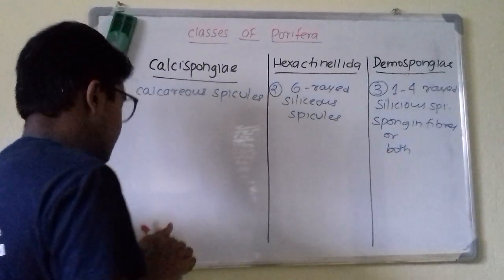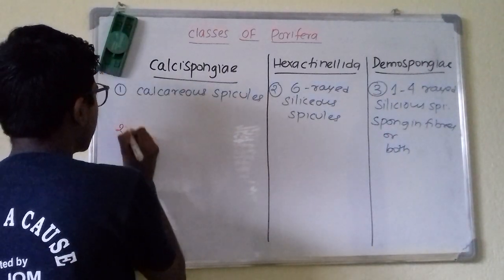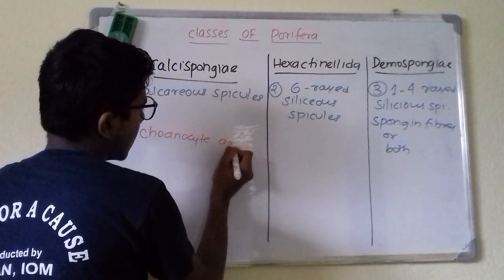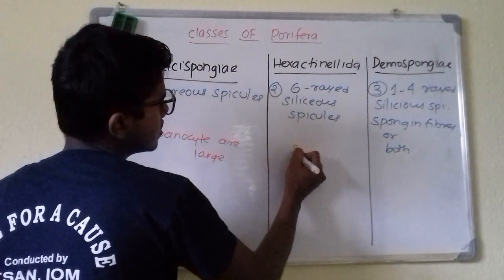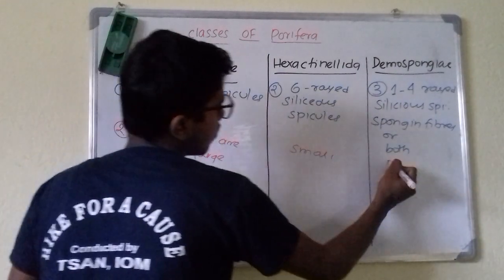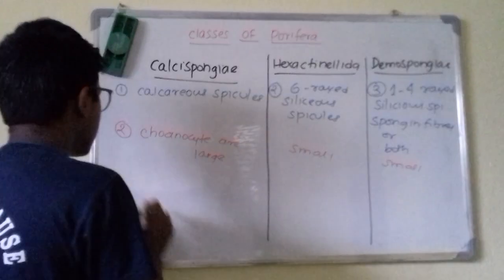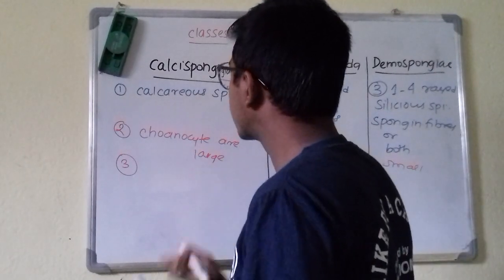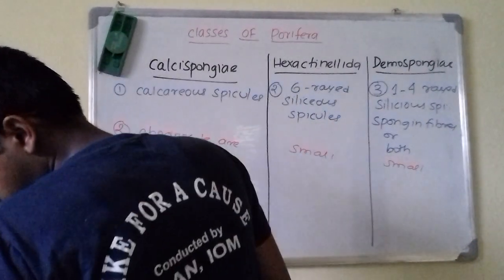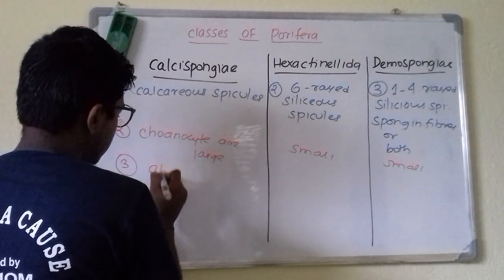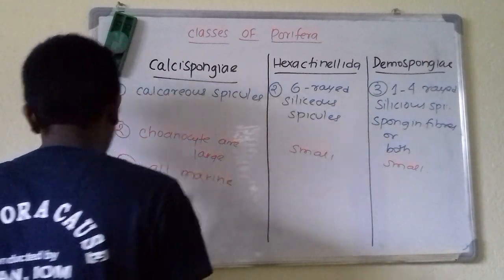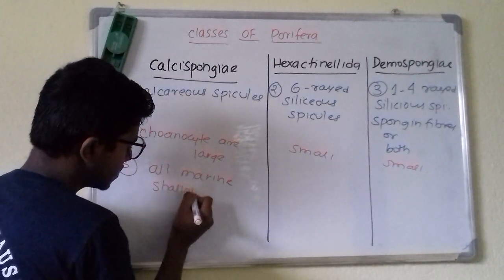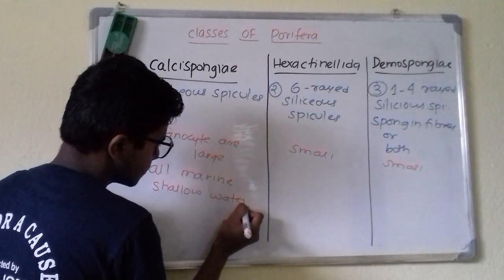Coming on to the choanocyte cells: in Calcispongia, the choanocyte cells are large. In both Hexactinellida and Demospongia, they are small. Coming on to the habitat: in Calcispongia, they are all marine, found in shallow waters.